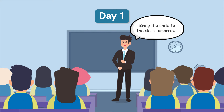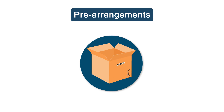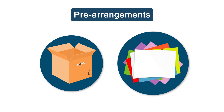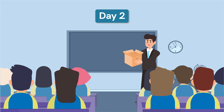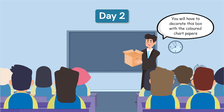Now, on the next day, when the students are ready with their chits, we will begin with the activity. Before we begin with the activity, make sure to pre-arrange a small waist cardboard box and some colored chart paper. When ready with the said items, we will keep the box on the table and ask the students to decorate it using the chart paper. Do not disclose the activity beforehand to the students. Let them be curious. Let the students take their time to decorate the box as they want.